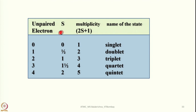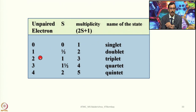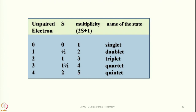Let's look into this table. I have given spin multiplicity, that is the spin angular quantum number 2S+1, where S is the total spin. When we have 0 unpaired electrons, 2S+1 equals 1 — this is called singlet. With 1 electron, S = 1/2, so 2S+1 = 2, called doublet. With 2 unpaired electrons it is 3 — triplet. With 3 unpaired electrons, 2S+1 = 4 — quartet. With 4 unpaired electrons, 2S+1 = 5 — quintet. You should remember these; calculate sigma S first, then 2S+1 multiplicity.